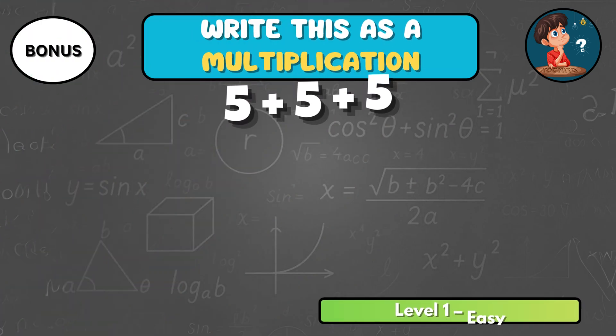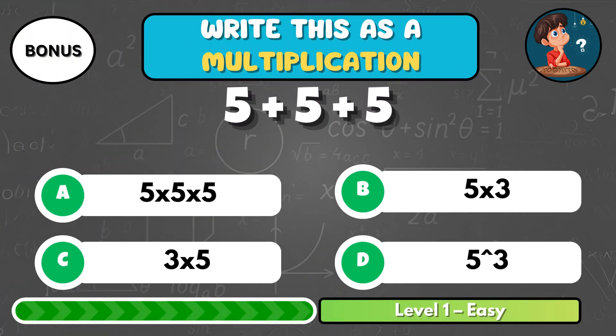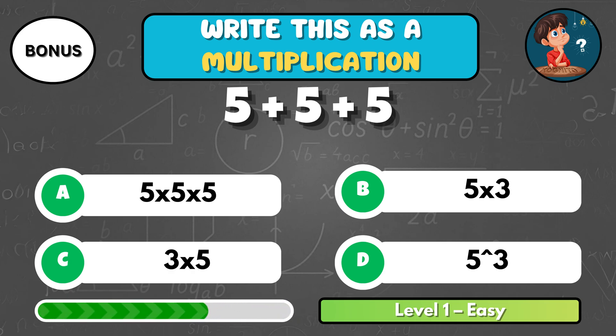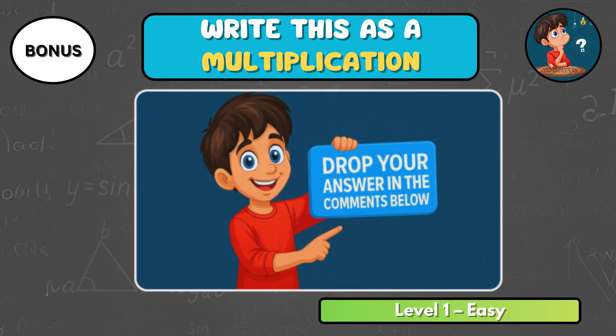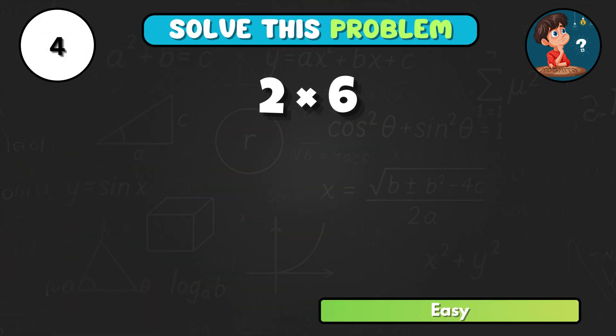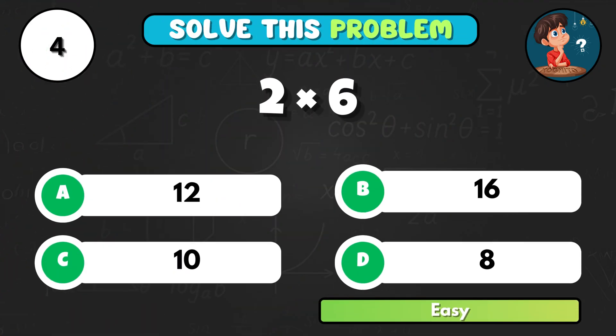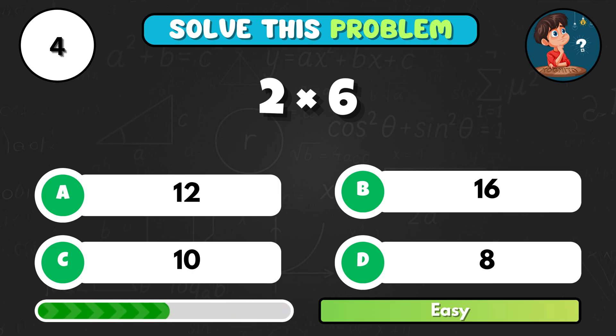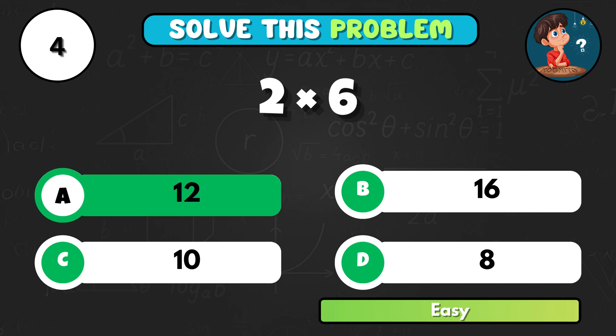If you add 5 plus 5 plus 5, how can you write it using multiplication? Drop your answer in the comments and watch on to see what the answer reveal will be. Think fast. Multiply 2 by 6. You get A, 12.